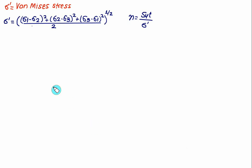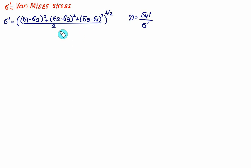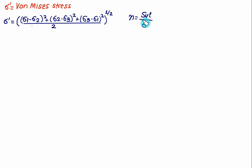The von Mises stress is given as sigma prime, which is equal to the square root of [(sigma1 - sigma2)² + (sigma2 - sigma3)² + (sigma3 - sigma1)²] divided by 2. For distortion energy theory, the factor of safety equals Syt divided by the von Mises stress.